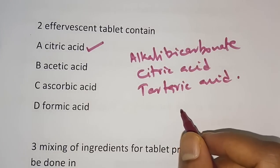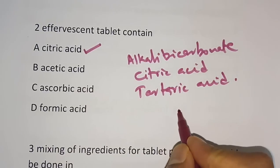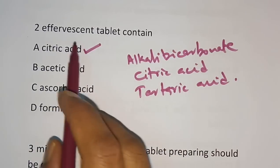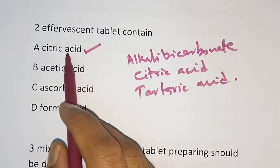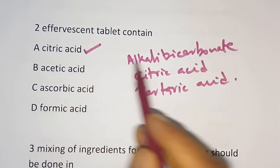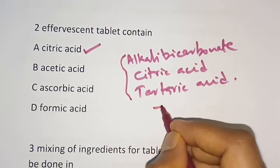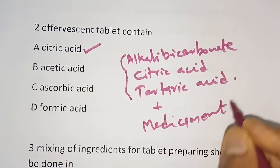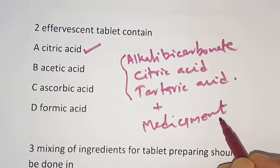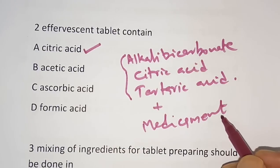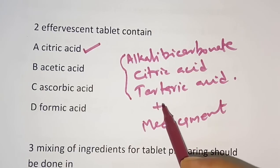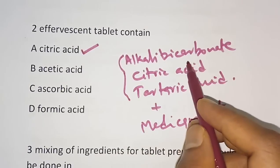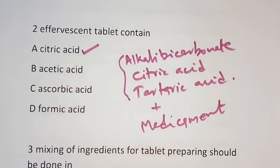Along with those, the medicament is also present. For example, vitamin C effervescent tablets contain ascorbic acid (vitamin C). Other examples include osteocare calcium effervescent tablets and redoxone vitamin C effervescent tablets. Since the question asks what all effervescent tablets contain, the most appropriate answer is citric acid.